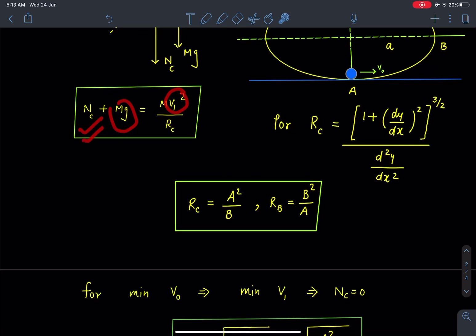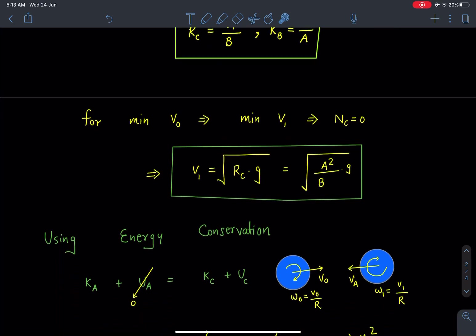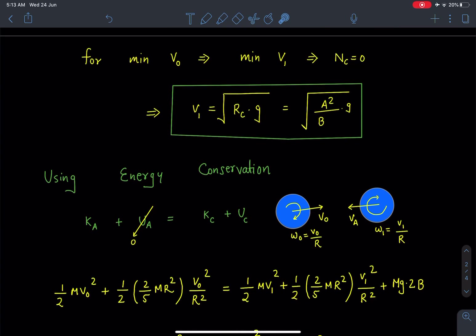So from here, by using the previous equation, we can say if this V₁ is minimum and Mg is fixed, Nᴄ should be minimum. Now this Nᴄ value, its minimum value has to be zero. So if we put this Nᴄ equal to zero here, we are going to get V₁ = √(Rᴄg), where Rᴄ is a²/b.